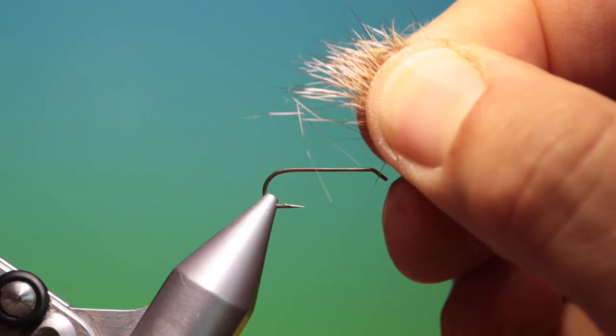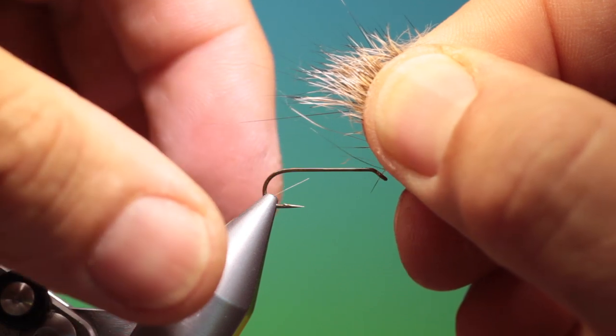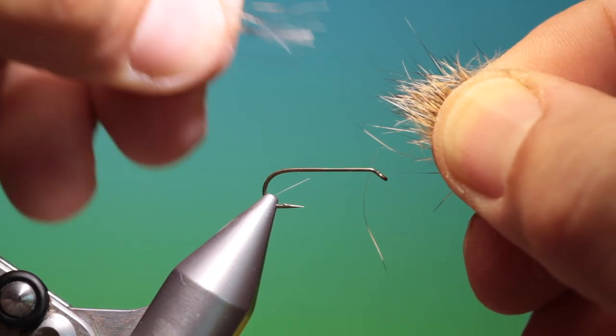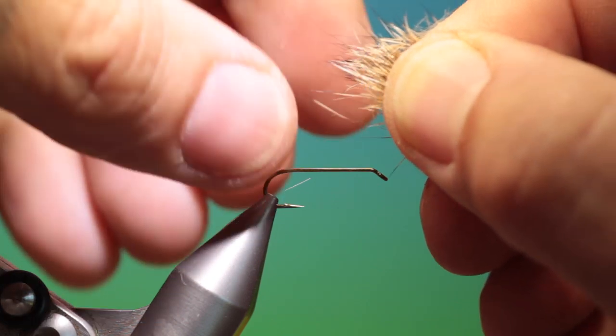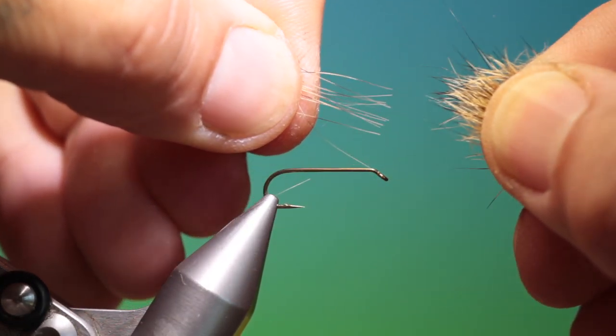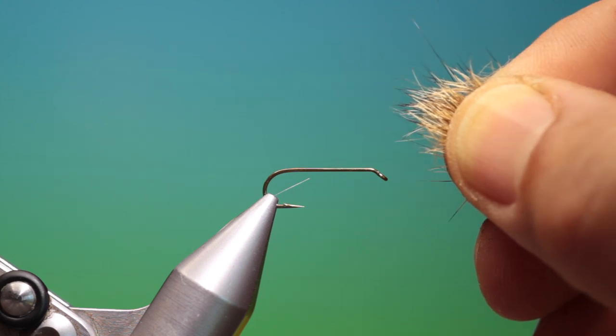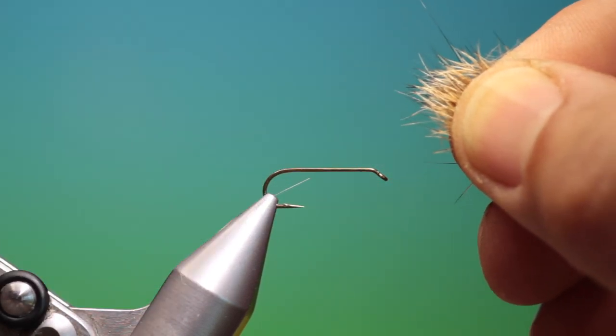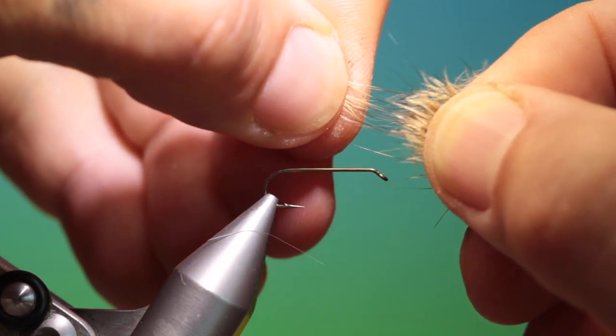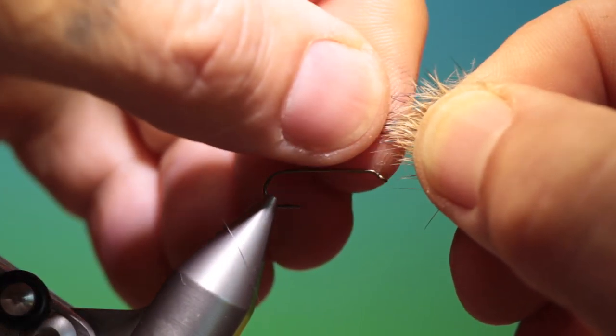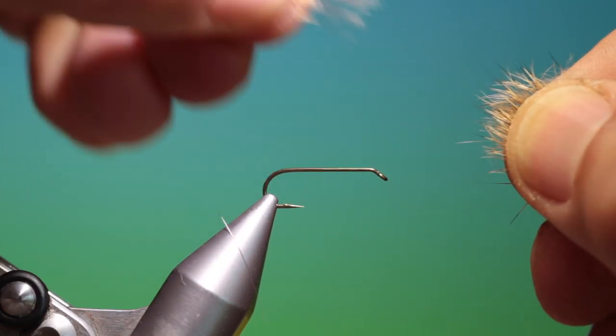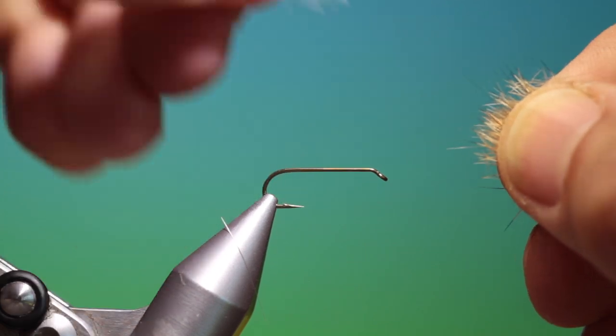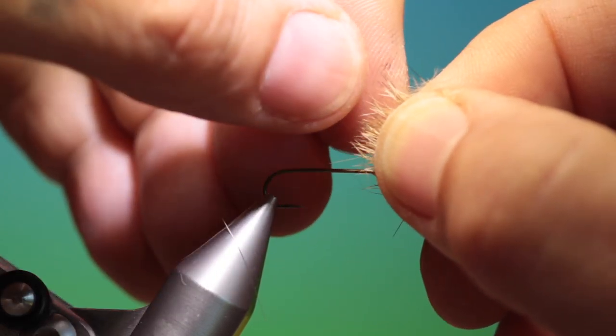So you hold the bottom of the piece you've cut off for the underfur very tightly. We just take hold of the guard hairs and we pull these out and they go just like that into the box with the CDC cuttings. It's the guard hairs we want for this. So just those come out like so and you can carry on until there are no guard hairs left.